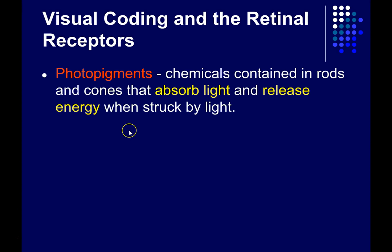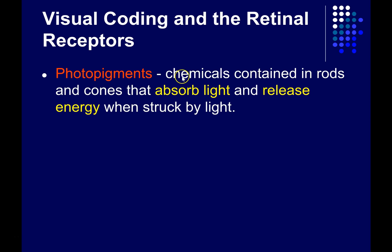A pigment is a chemical that absorbs light. So when your clothes were manufactured, the manufacturers added pigments to the fabrics to change their color. Photopigments in your eye are chemicals contained in the rods and cones that absorb light, just like other pigments.